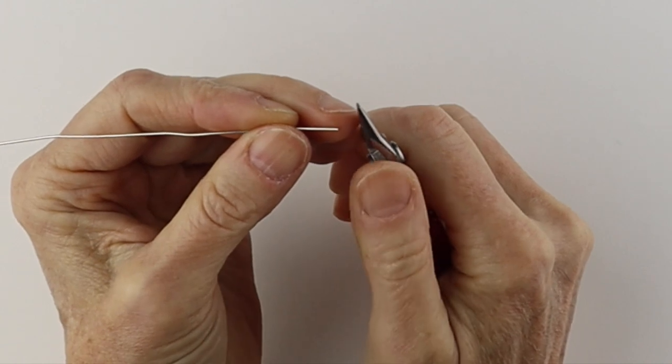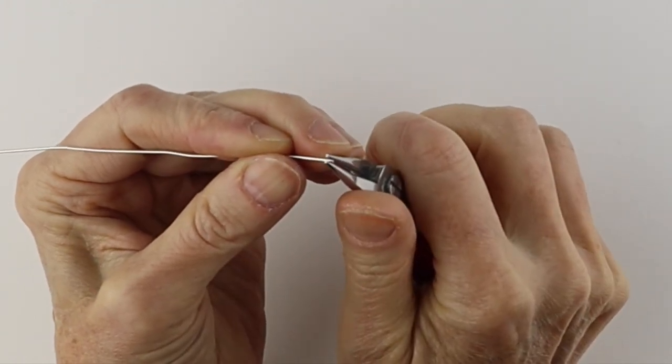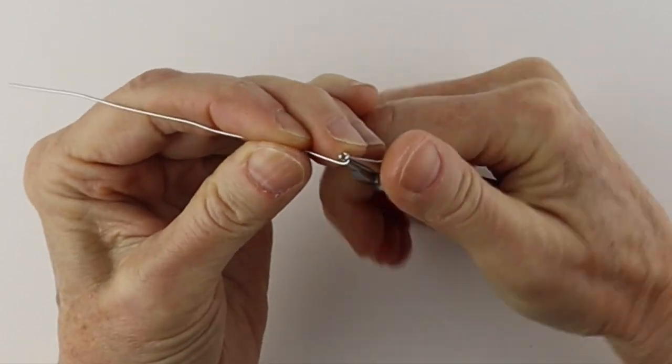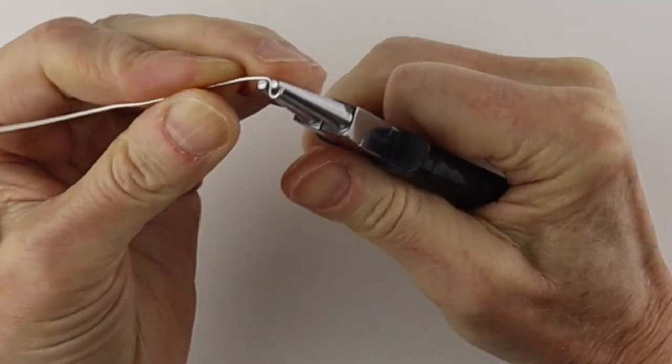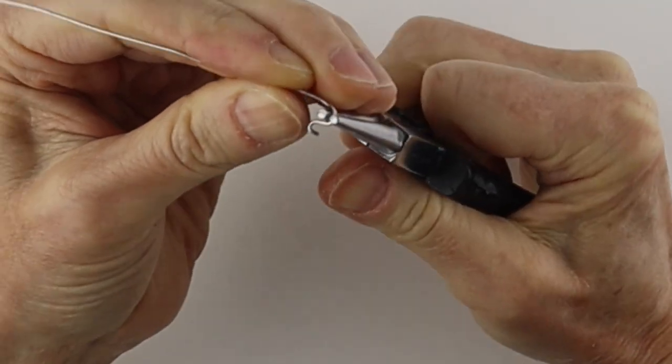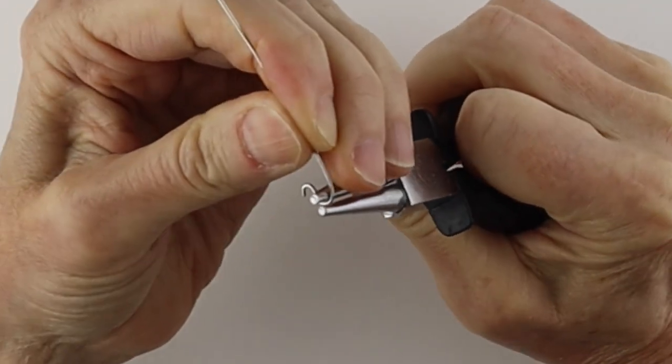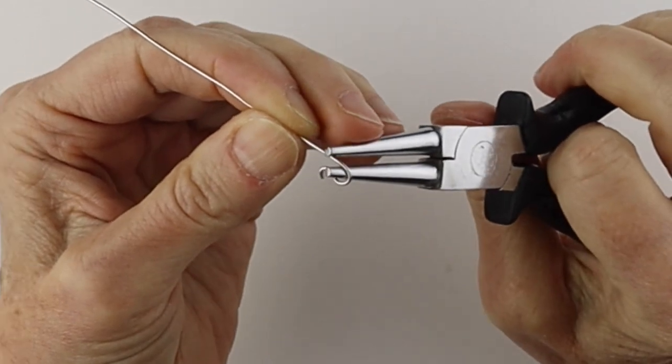To make the cat, we're going to start with the tail, and we're just going to do a little loop around here. And then I'm going to take my round pliers and loop it around, almost like an infinity sign.